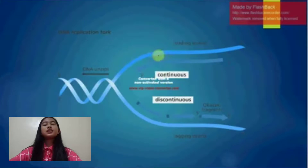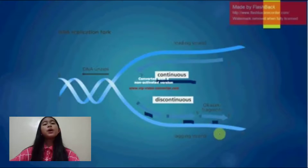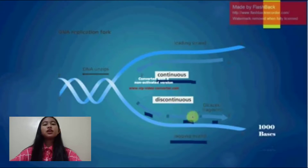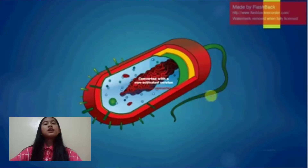The leading strand is synthesized continuously, but the opposite strand is copied in short bursts of about 1,000 bases as the lagging strand template becomes available. The resulting short strands are called Okazaki fragments.